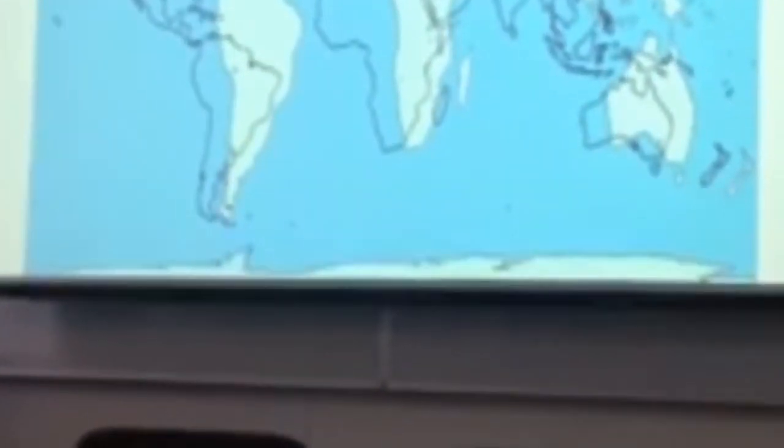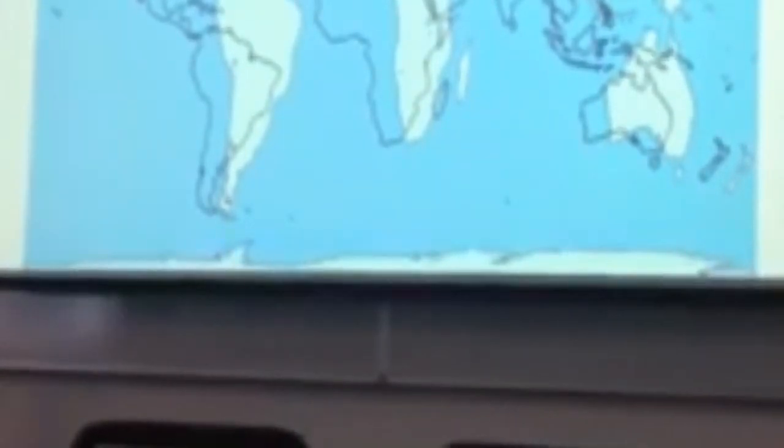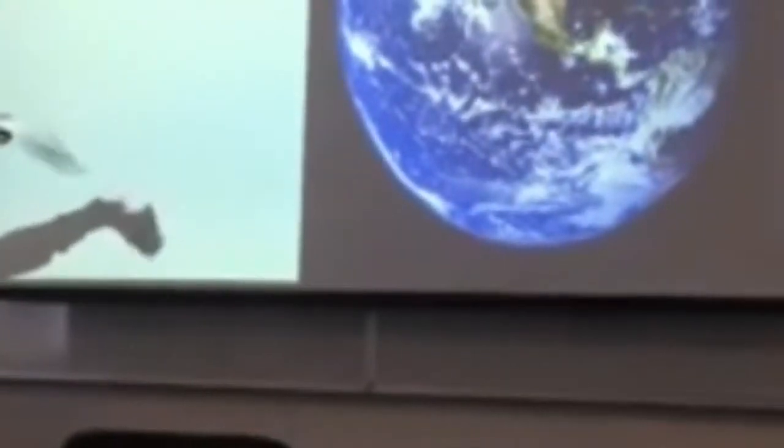Now, guess which map that our leading space organizations tend to use? This is NASA's map showing the Earth. All these pictures that I gathered are all from NASA.gov. Any one of us can go and look on NASA.gov. These are all on NASA.gov.